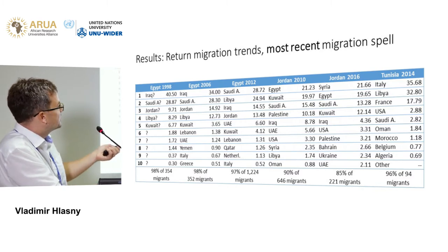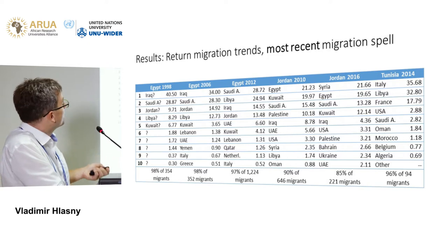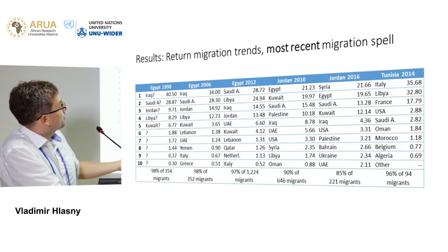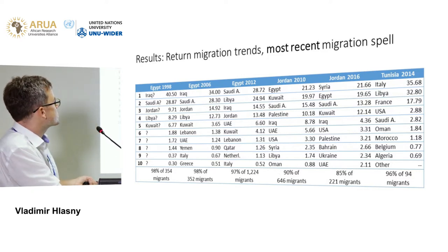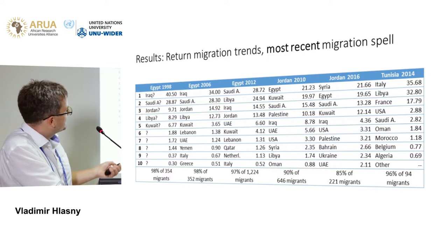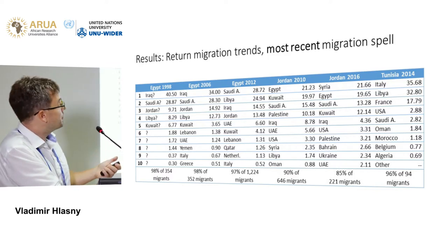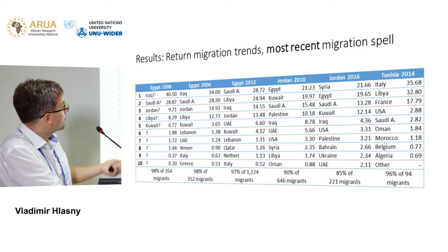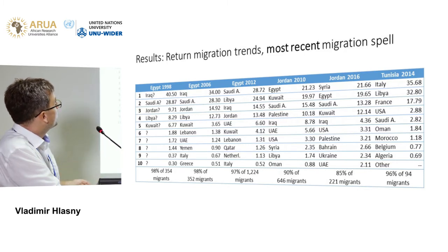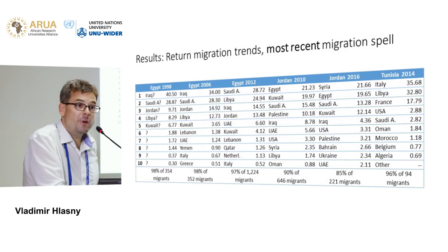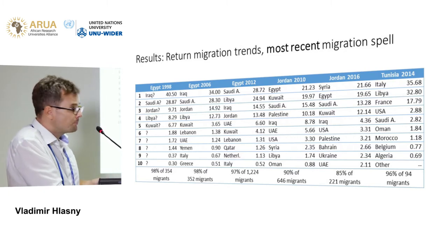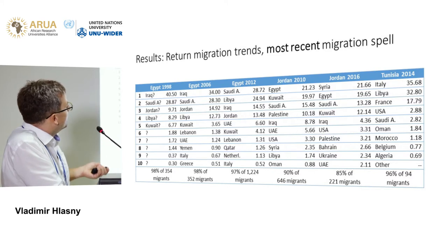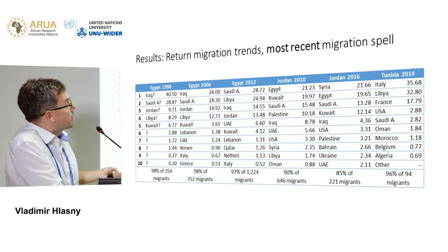There are systematic differences between where people migrate to from Egypt versus Jordan, and Tunisia is somewhere in between. Because of historical and geographic differences, Tunisian migrants tend to go to Europe, whereas Jordanian and Egyptian migrants go to the rest of the MENA region and to the Gulf countries. That might affect the economic outcomes of these migrants.